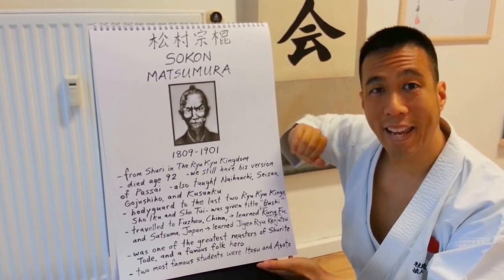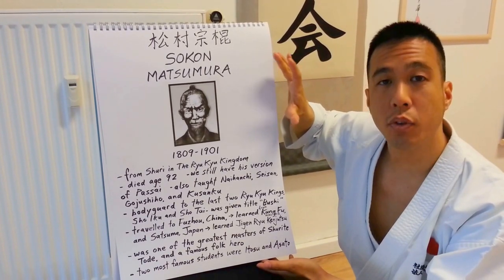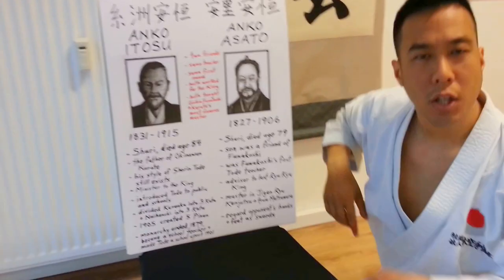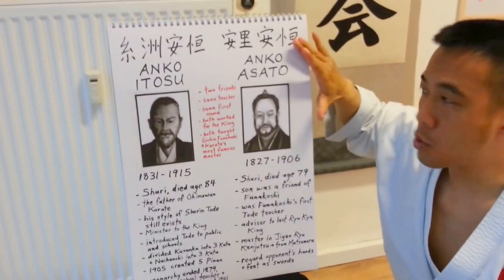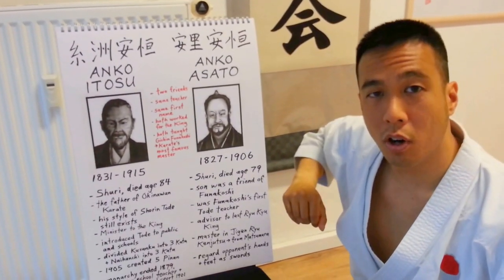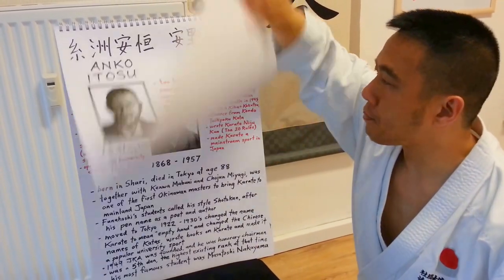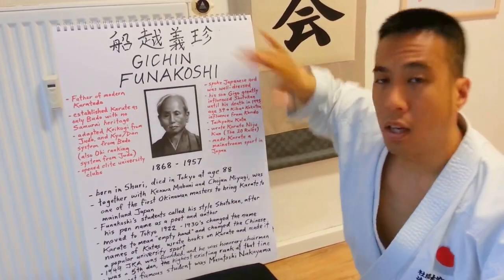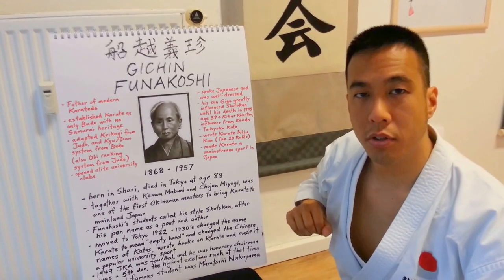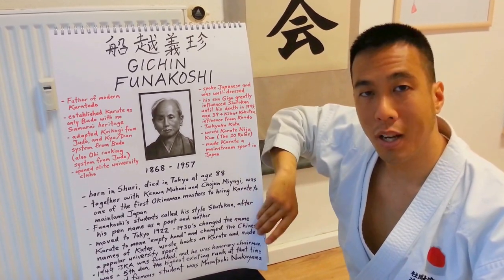Matsumura was also the bodyguard and head of the military for the last three of the Ryukyu kings. Two students of Sensei Matsumura — Sensei Itosu and Azato — were colleagues from the same generation and had one famous student: Gichin Funakoshi. Gichin Funakoshi is considered the father of modern karate and is the founder of our style, the Shotokan.